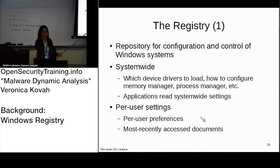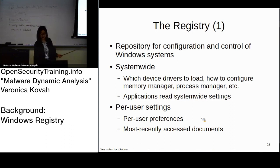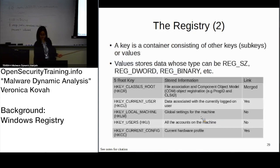The other type is a per-user setting, which only affects one particular user. One example is the run-on-logon registry keys — when a user logs in, certain files can execute, and these can be different between user one and user two.